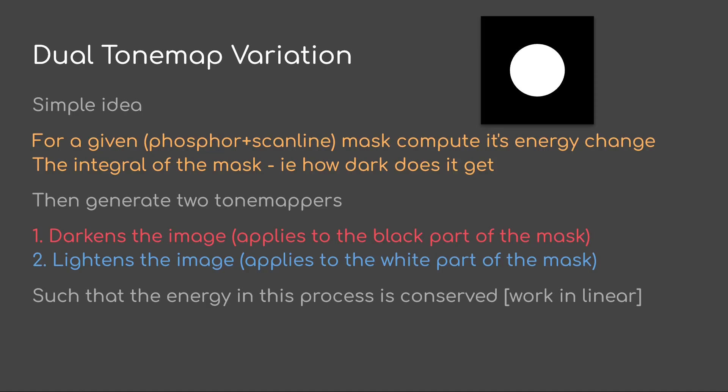Then generate two Tone Mappers. One that will darken the image, we'll apply this to the black part of the mask, and another that will lighten the image, we apply this to the white part of the mask.